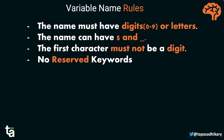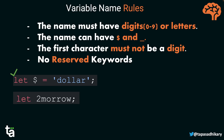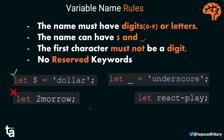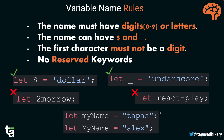Let's identify valid versus invalid names. `let $ = 'string'` — valid, because `$` alone is allowed. `let 2morrow = ...` — invalid, because the first character is a digit. `let _ = '_'` — valid, underscore is allowed. `let react-play = ...` — invalid, because hyphens are not allowed as special characters; only `$` and `_` are permitted.